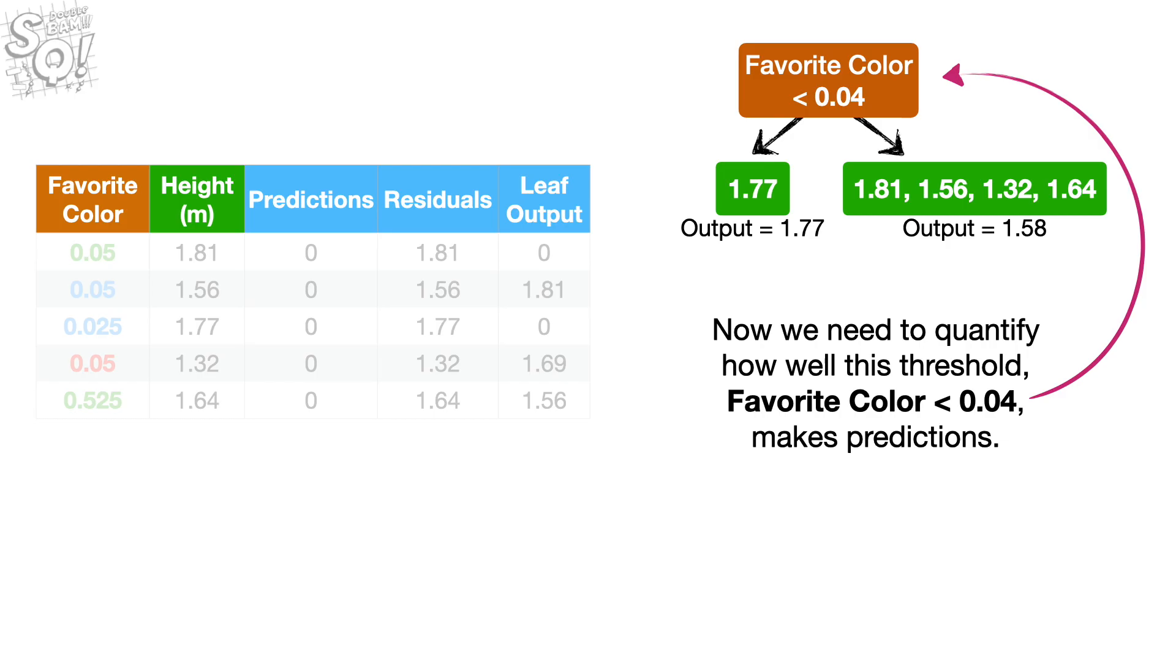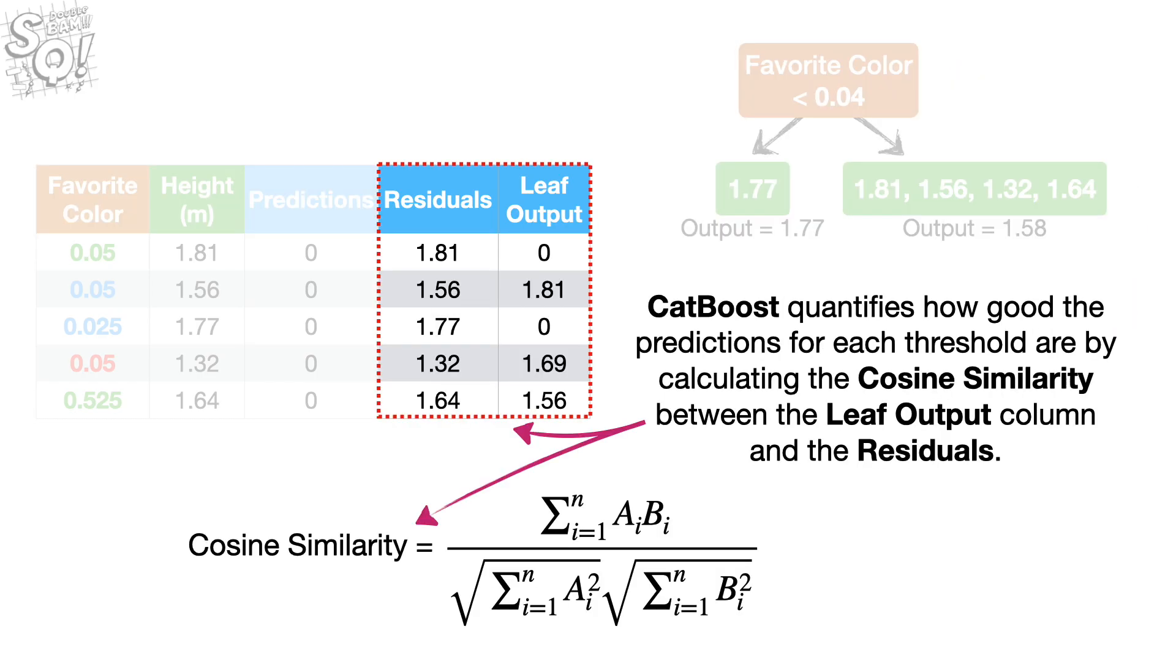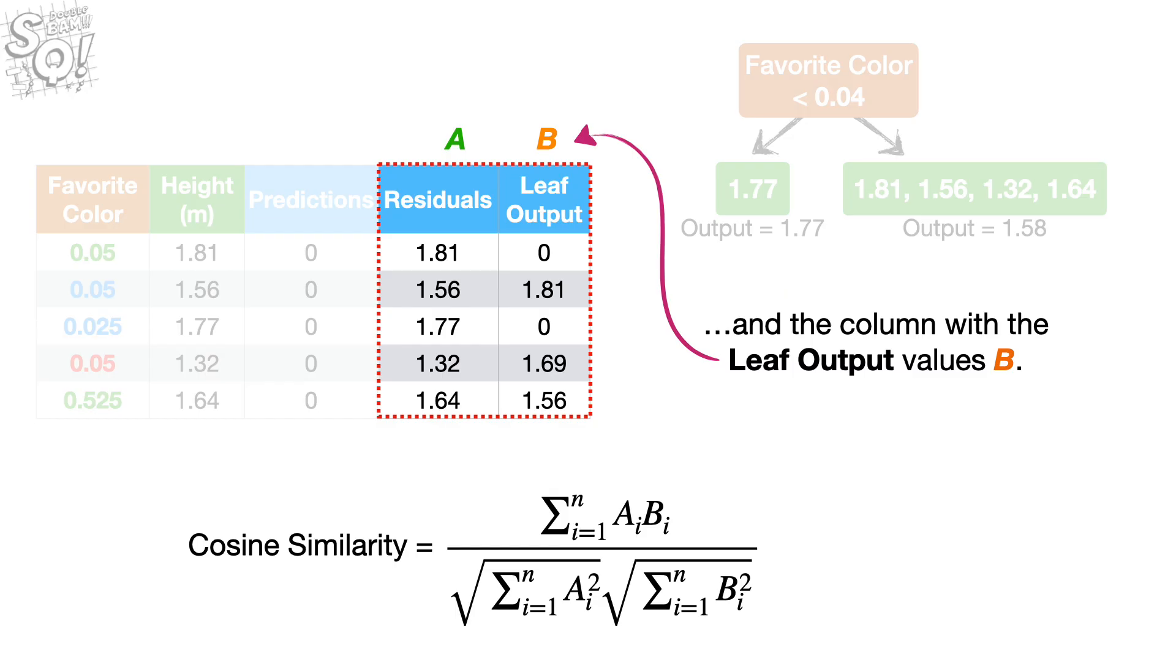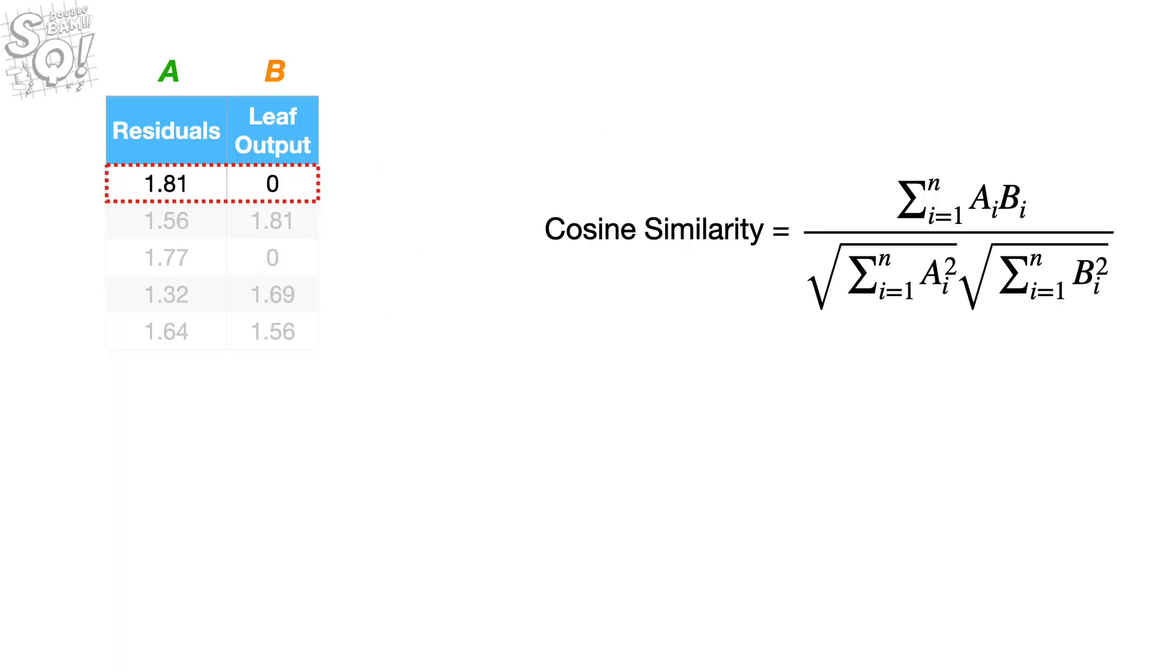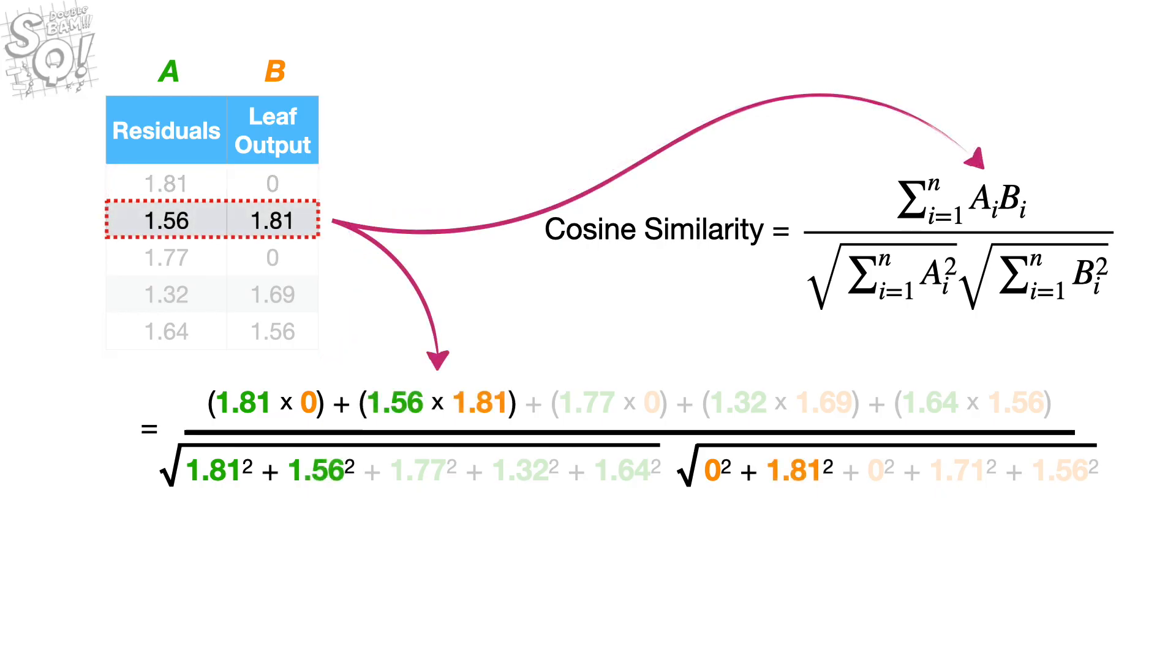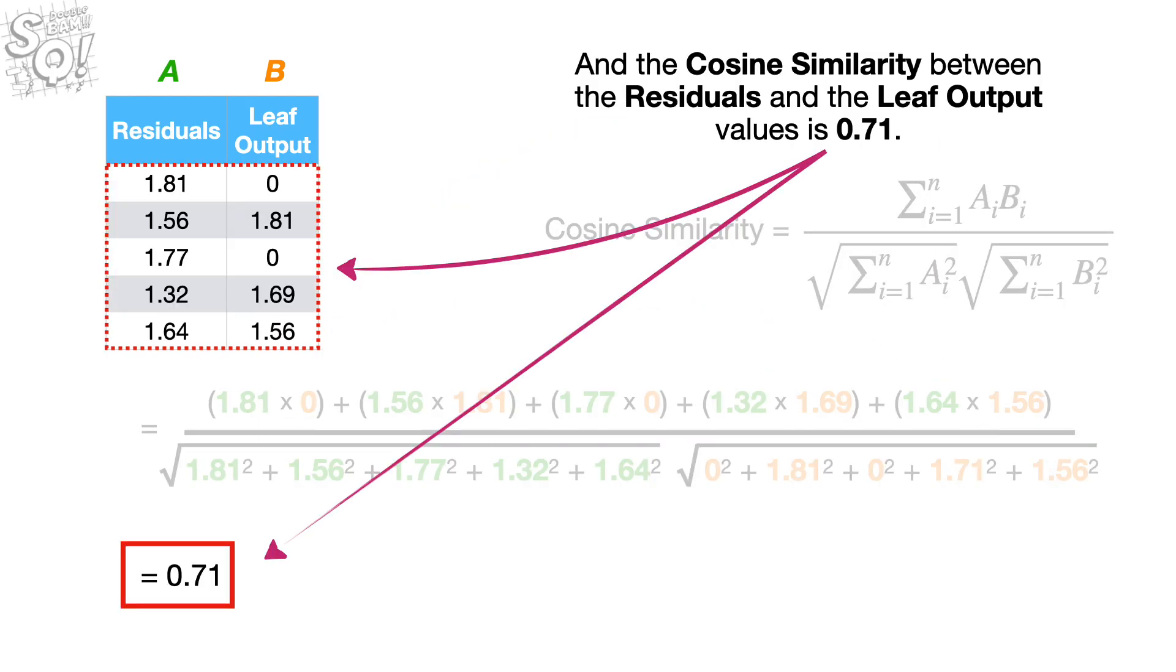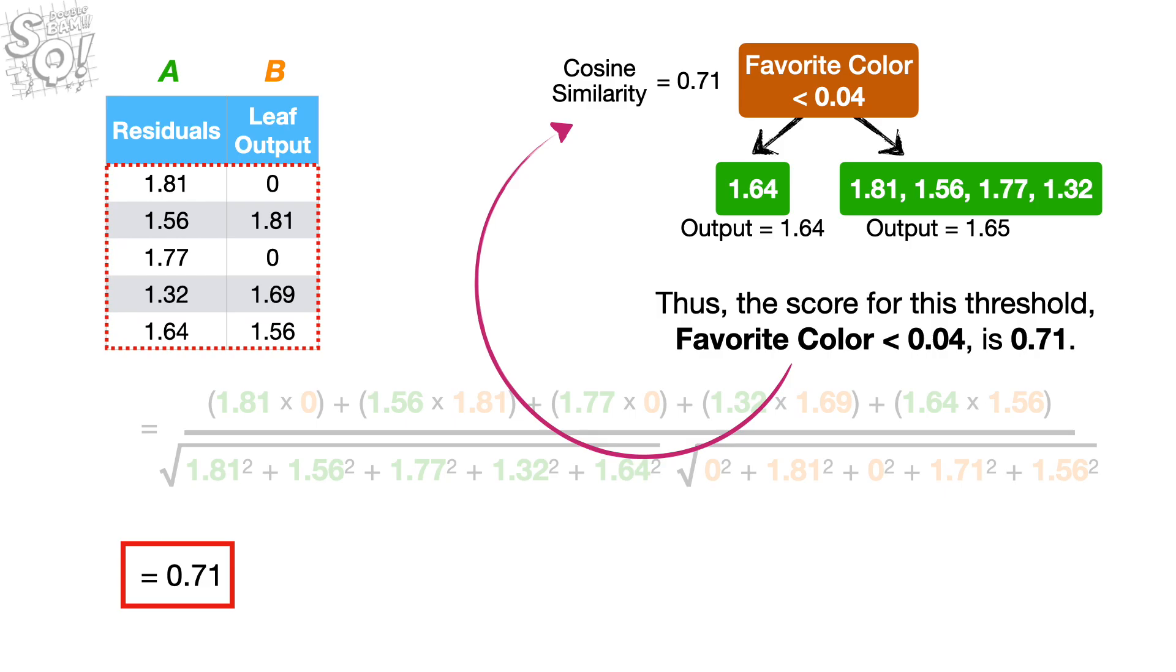Now we need to quantify how well this threshold, favorite color less than 0.04, makes predictions. CatBoost quantifies how good the predictions for each threshold are by calculating the cosine similarity between the leaf output column and the residuals. We start by labeling the column with the residuals, A, and the column with the leaf output values, B. Now, computing the cosine similarity for this threshold, favorite color less than 0.04, is just a matter of plugging the numbers into the equation. And the cosine similarity between the residuals and the leaf output values is 0.71.